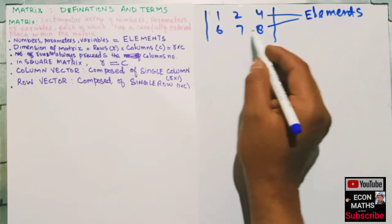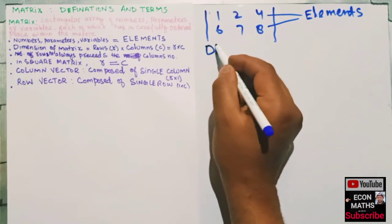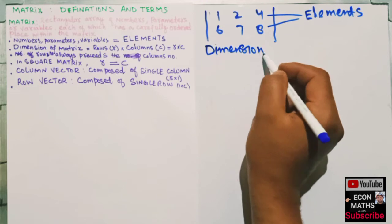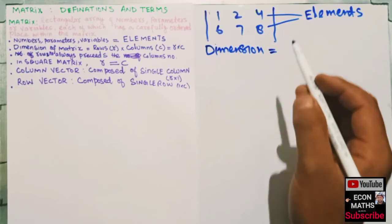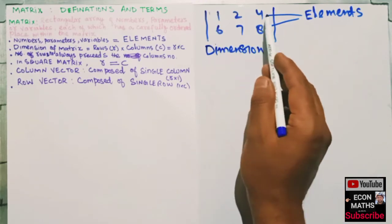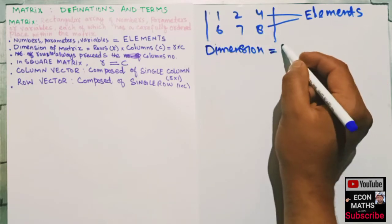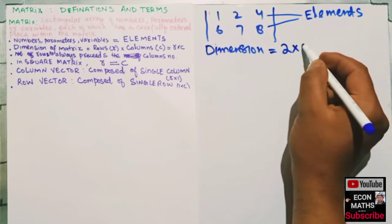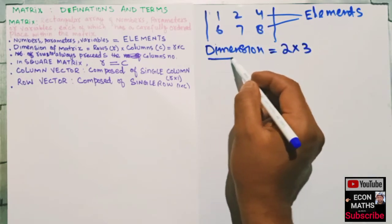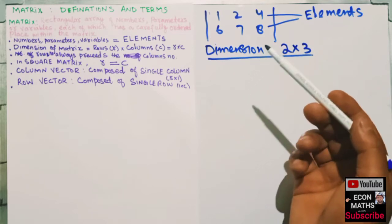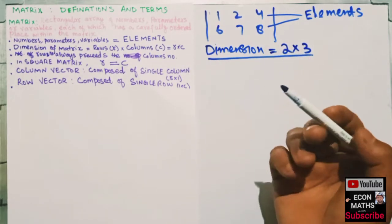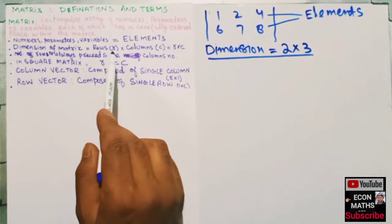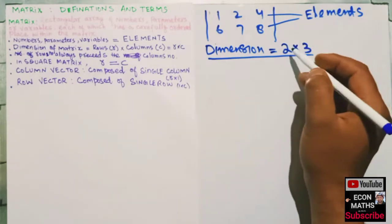So I can say the dimension of this matrix is two times three. There are two rows and three columns, so the dimension of the matrix is the number of rows multiplied by the number of columns.